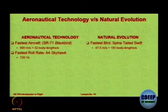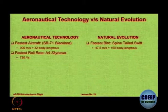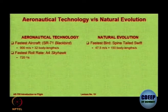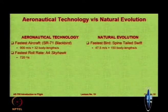Roll rate is another measurement of aircraft efficiency. The fastest roll rate recorded is for the A-4 Skyhawk aircraft at 720 degrees per second — in one second it can complete two full rotations. The fastest roll rate in nature is the barn swallow, which can roll at 5000 degrees per second. The rate at which a bird can turn is far greater than any aircraft we have built.